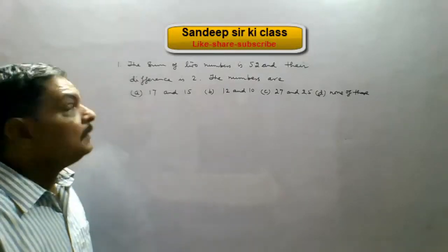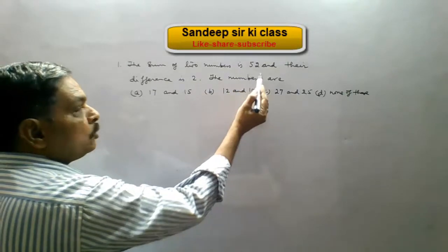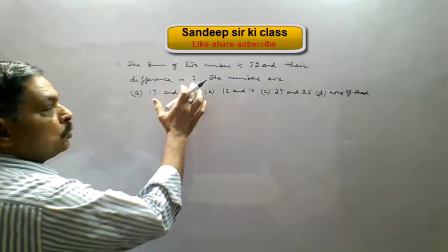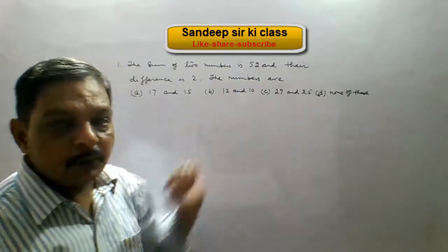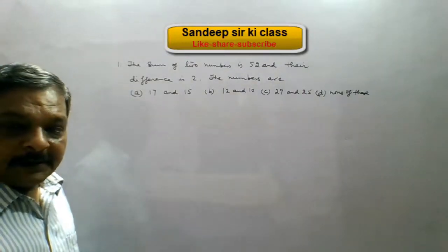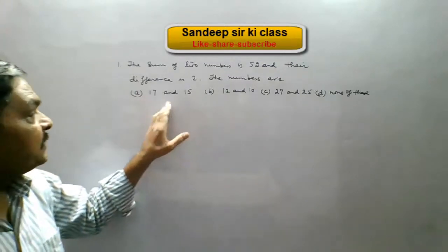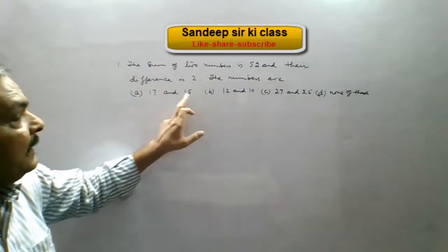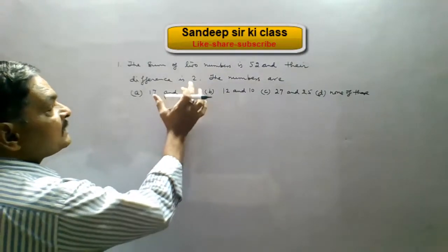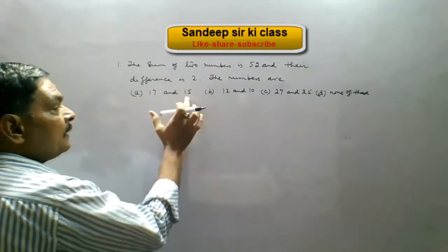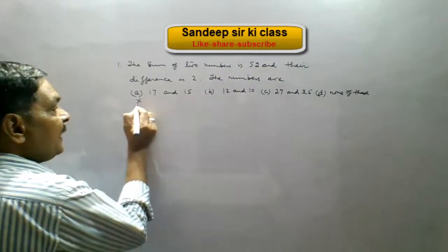Now exercise 2B, question number 1: the sum of two numbers is 52 and their difference is 2. Then the numbers are — four options are given. Looking at option A, which is 17 and 15: their difference is 2 but the sum is not 52, since 17 plus 15 is not 52. So option A is wrong.